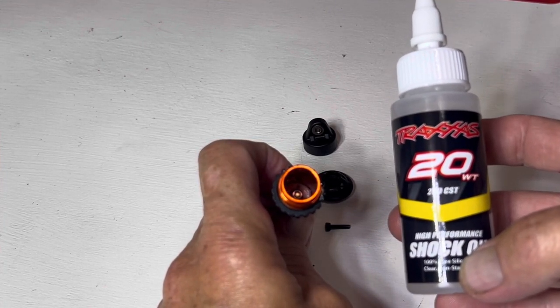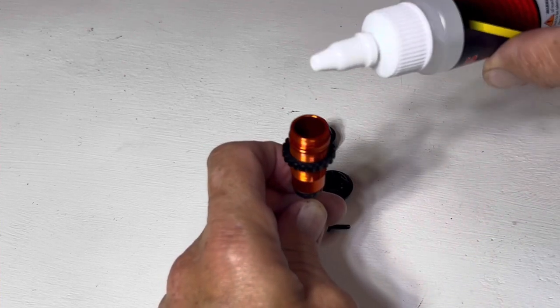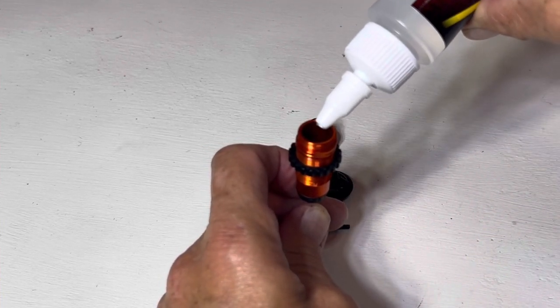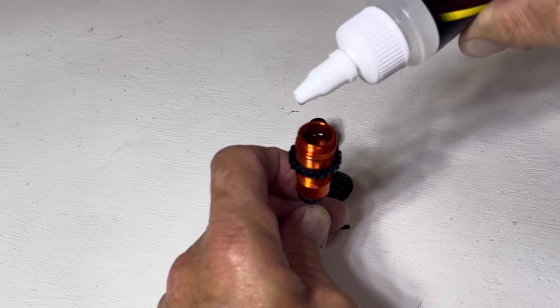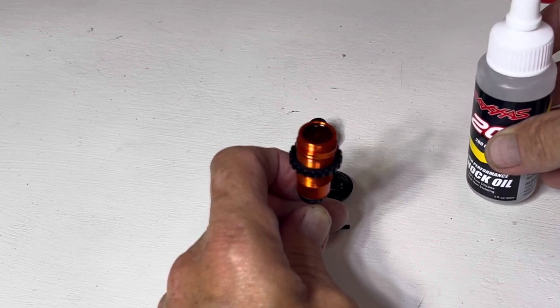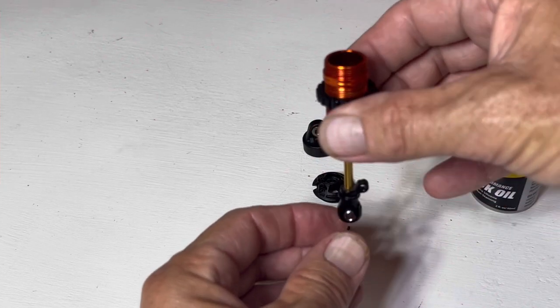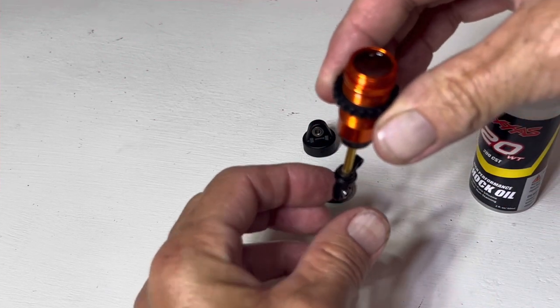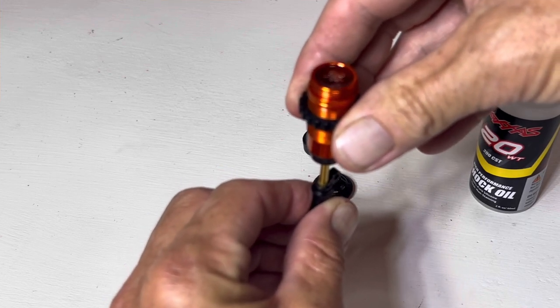So the next thing we're going to do is take our 20 weight oil from Traxxas. We're going to fill this up almost to the top. There we are. Then the next thing we're going to do is just hold up and down. We're going to push this spring in a little bit and pull it back down.